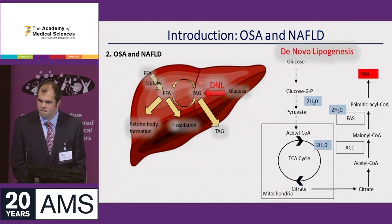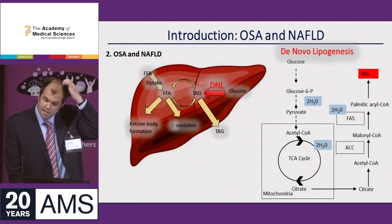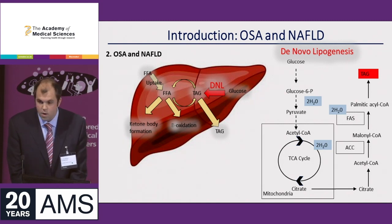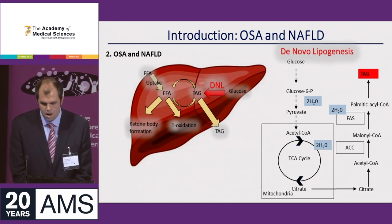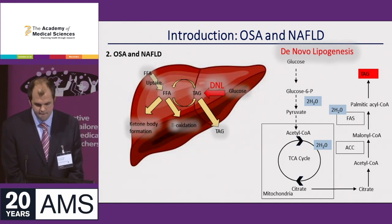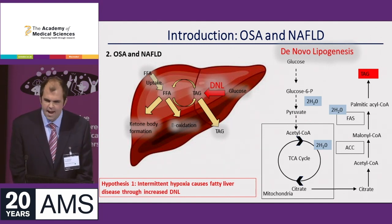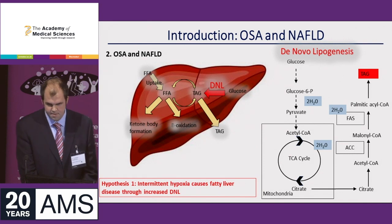De novo lipogenesis is the process by which newly synthesized lipid is derived from carbohydrate precursors. We can measure that using stable isotope deuterated water, which is incorporated into newly synthesized lipid at different points in its synthesis, and then quantify that using mass spec in different lipid fractions. This leads me to one of my first hypotheses: whether intermittent hypoxia could cause fatty liver disease by driving increased de novo lipogenesis.